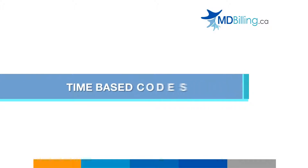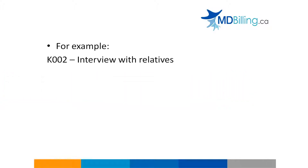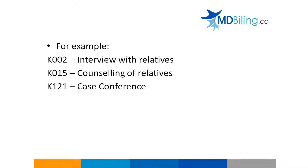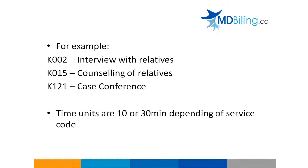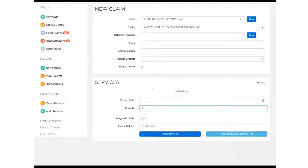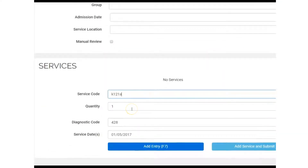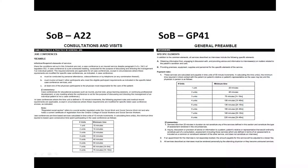In this module, we'll review a few time-based codes, such as Interview with Relatives K002, Counseling of Relatives K015, and Hospital Inpatient Case Conferences with Other Medical Personnel K121. Most time-based codes are billed in either 10- or 30-minute time units, or as specified by the Schedule of Benefits section. For every time unit, enter a quantity of 1. For example, a 30-minute hospital inpatient case conference is conducted. Since this code has a 10-minute time unit, we'll use a quantity of 3 as we've spent 30 minutes participating in the conference. We also suggest that you review the OHIP Schedule of Benefits pages for each of the time-based codes to determine the payment rules and minimum time details.